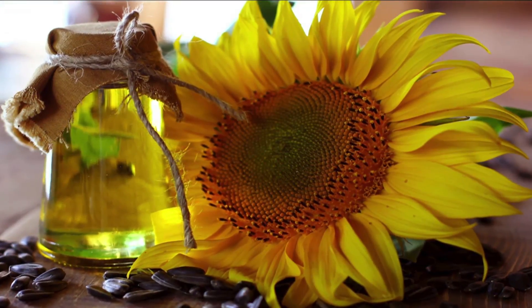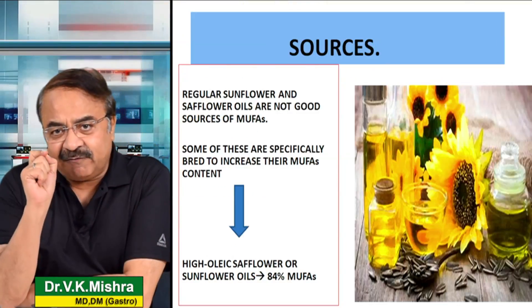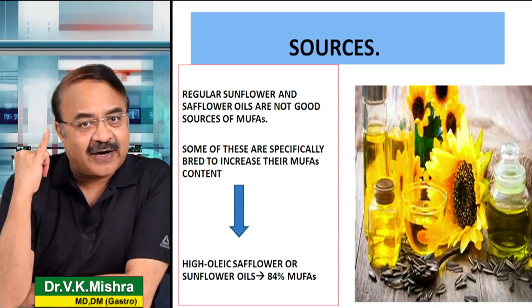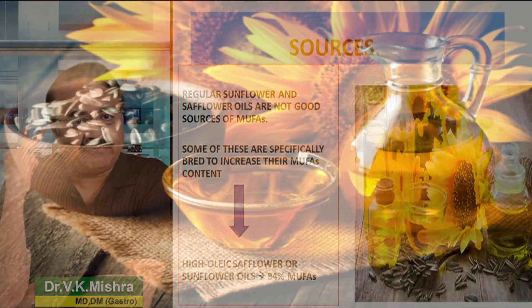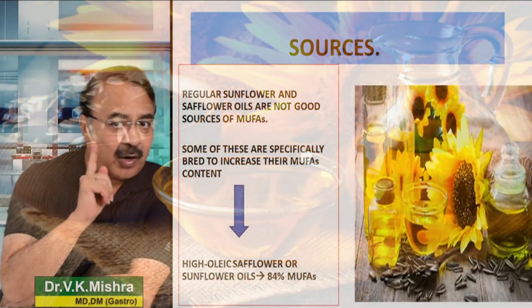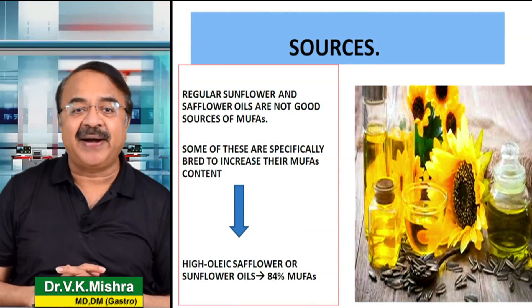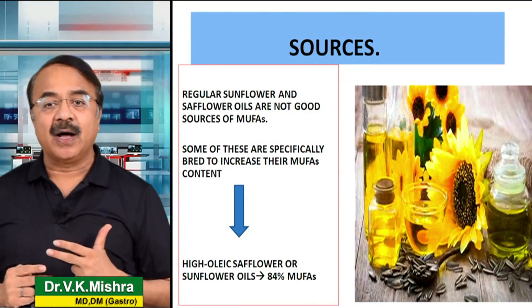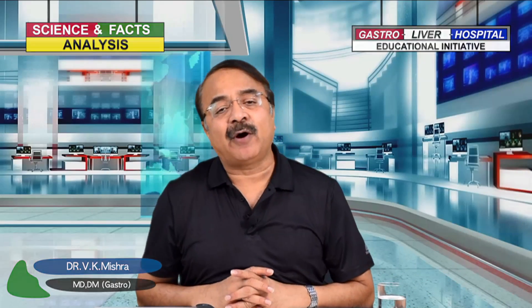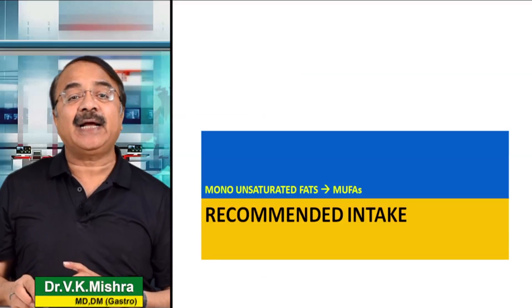सबसे ज़्यादा जो MUFA या mono unsaturated fat है वो वास्तव में होता है high oleic sunflower oil में — that is 84%. मैं चाहूँगा इसे आप ध्यान से समझें, in the sense कि अगर हम sunflower oil को ध्यान से देखें तो जो regular sunflower या safflower oil है उसमें MUFA की amount उतनी ठीक नहीं होती. Some of these are scientifically bred to increase the amount of MUFA. तो आपको ध्यान से देखने की ज़रूरत है कि high oleic safflower और sunflower oil, जिसमें high oleic content लिखा हुआ है, इनमें MUFA की content 84% होगी.